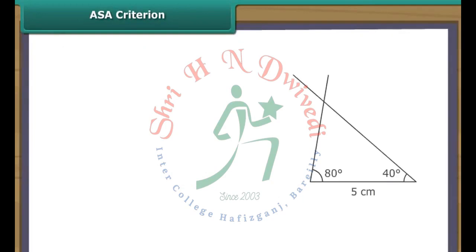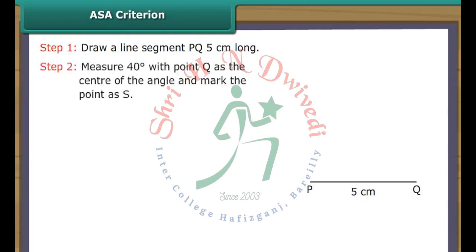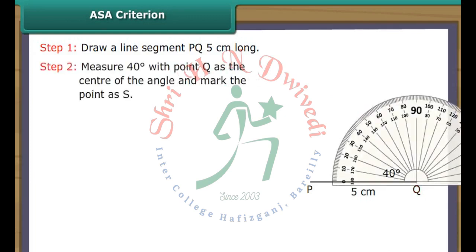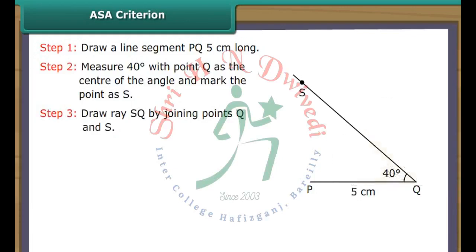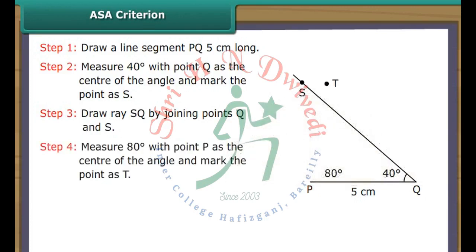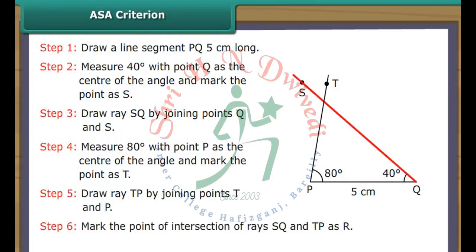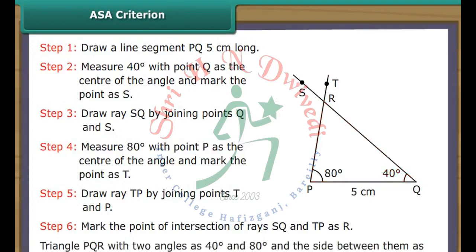ASA Criterion. Let us now draw a triangle, two of whose angles measure 40 degrees and 80 degrees and the side between them measures 5 cm. Draw a line segment PQ 5 cm long. Measure 40 degrees with point Q as the center of the angle and mark the point as S. Draw ray QS. Measure 80 degrees with point P as the center of the angle and mark the point as T. Draw ray TP. Mark the point of intersection of rays QS and TP as R. Triangle PQR with two angles of 40 degrees and 80 degrees and the side between them as 5 cm is constructed.